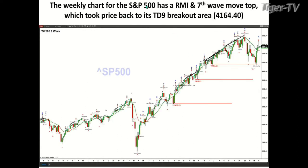Number three: the weekly chart for the S&P 500 has a Rhodes momentum indicator top. I also have it as wave number seven — letter G — part of your road wave. So we've got those two tops that formed at the high. What happened in the weekly chart is price pulled all the way to that breakout level, established by the TD9 count tool — 4164.40 was that breakout level. Price hit that, and now we've got price trading for week number three above this green oscillator and change line.